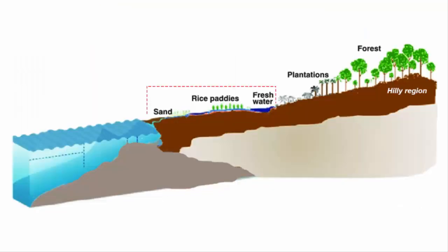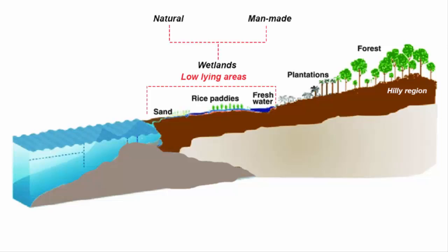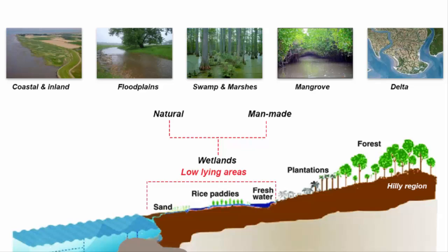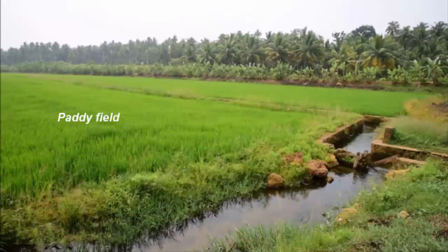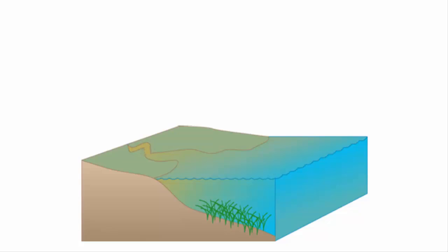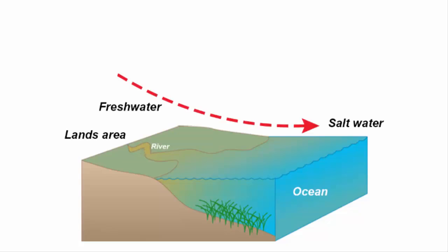Wetlands are usually found in low-lying areas. They can be both natural and man-made. They can be coastal and inland — flood plains, swamps, marshes, mangroves, deltas and lakes. Even an agricultural field like a paddy field is a wetland. Wetlands can contain freshwater, saltwater, or brackish water, which means both fresh and saltwater.